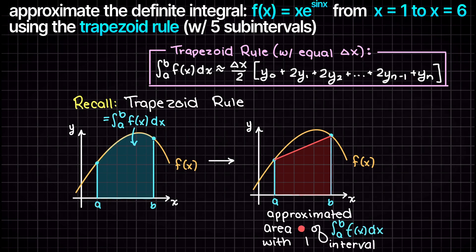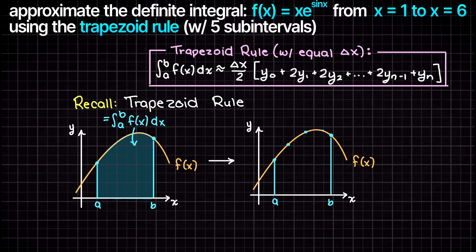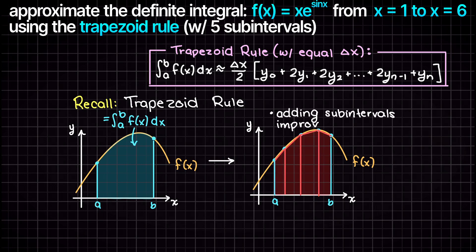The accuracy of this method improves with more trapezoids, meaning our selected step size is a trade-off as smaller step sizes will give us more accurate solutions at the cost of more work or computation time.